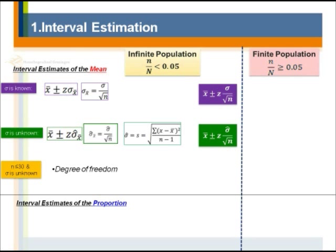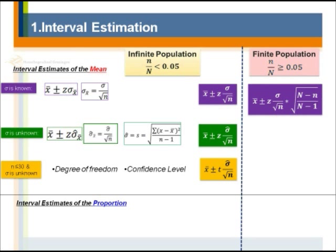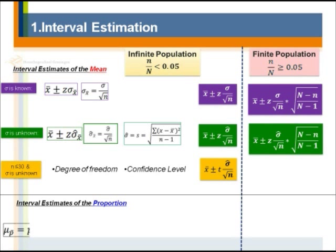When you don't know the population standard deviation and at the same time you have a very small sample size — smaller than or equal to 30 — you first need to check the degree of freedom, then find the confidence level and the alpha level, and then check the t-value instead of the z-value to construct the interval estimate. For a finite population, you additionally need to apply the finite population correction factor (FPC).